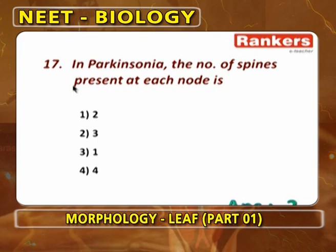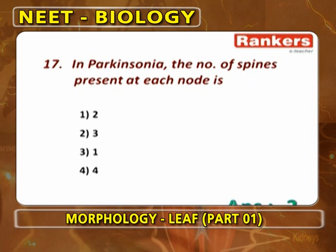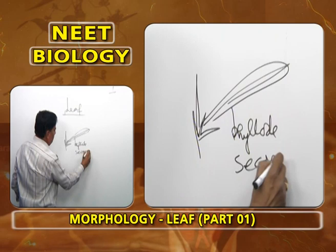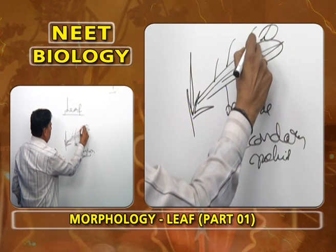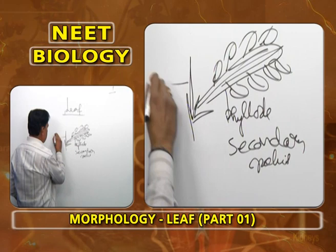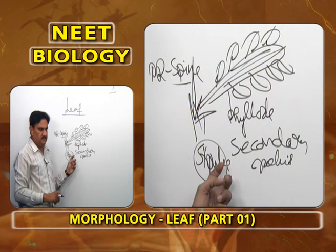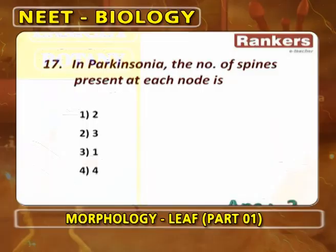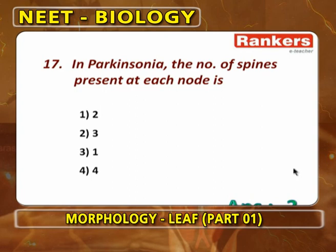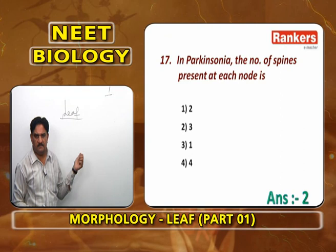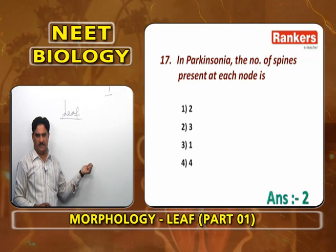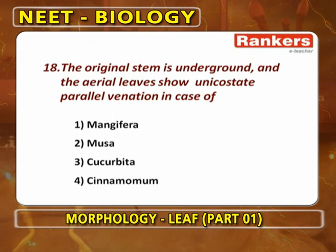In Parkinsonia, the number of leaf spines at each node is 3. It is bipinnately compound: secondary rachis is modified into phyllode (performs photosynthesis); primary rachis becomes one spine; two stipules become two spines. So primary rachis (1 spine) plus stipules (2 spines) equals 3 spines per node.